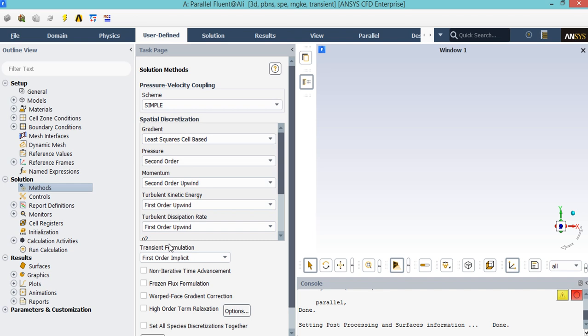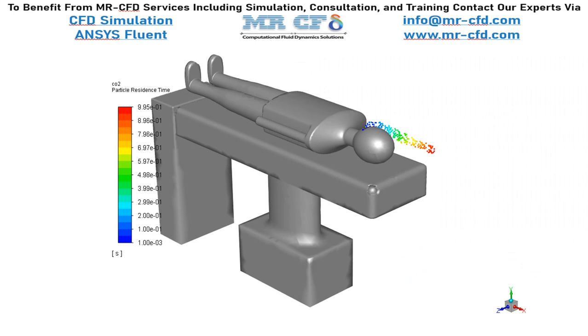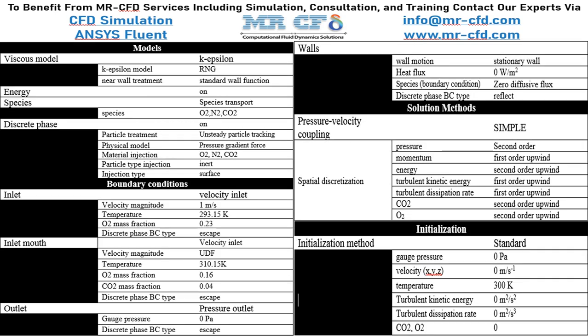For the SIMPLE pressure-velocity coupling, the SIMPLE algorithm is an iterative solver that uses a relationship between velocity and pressure correction to enforce mass conservation and to obtain the pressure field. In this slide, you can see the carbon dioxide particles exiting from a patient's mouth, and you can easily see how particles move toward the exit and not spread inside the room. Finally, a summary of the different settings and setup used in this project is presented.